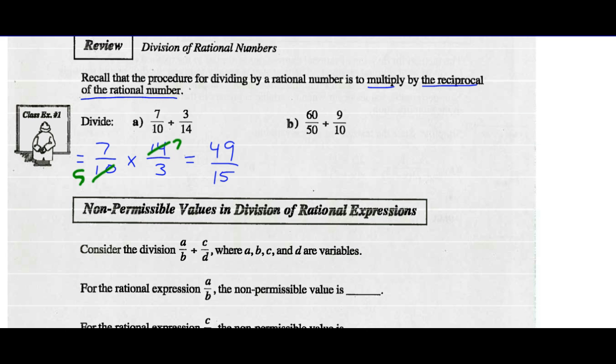My denominator is 5 times 3, which is 15. So 49 over 15 — that's in lowest terms because neither the numerator nor denominator have a common factor. This is an improper fraction, which is fine. We can leave it as an improper fraction in lowest terms. You can write it as a mixed fraction, but we're good like that.